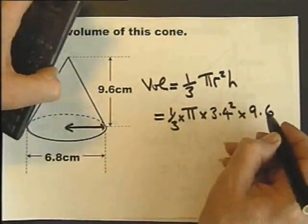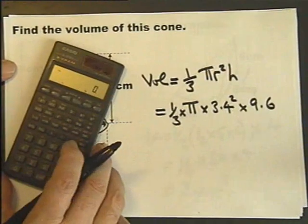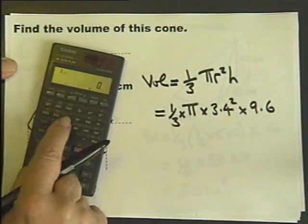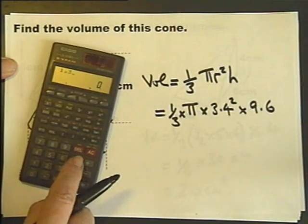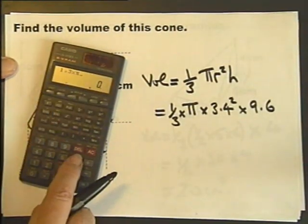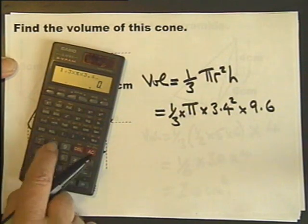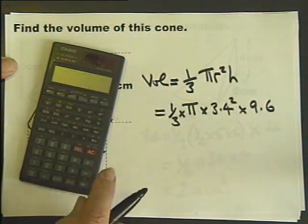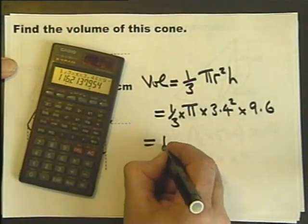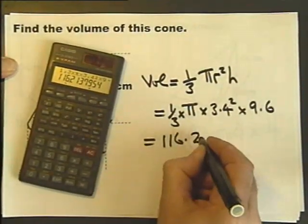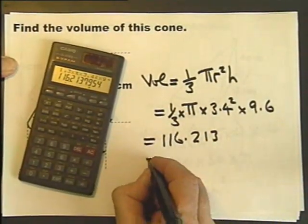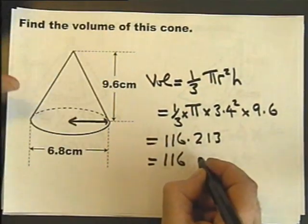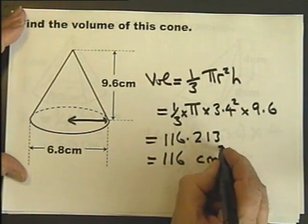So this is a calculator job. So, a third, we'll use the fraction button. 1, fraction button 3, that's the third, multiplied by pi, multiplied by 3.4 squared, multiplied by 9.6. The answer is 116.213... Let's do it to the nearest whole number. And that is cubic centimeters.